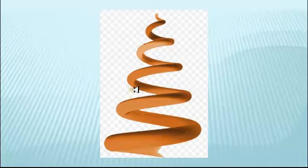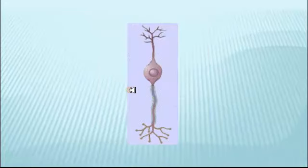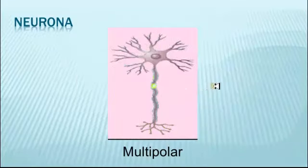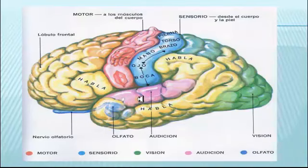Los impulsos nerviosos son enviados al ganglio espiral de Corti. Este los transfiere a los núcleos cocleares dorsal y ventral situados en la parte superior del bulbo raquídeo. De ahí es conducido hacia las zonas auditivas de la corteza cerebral temporal.